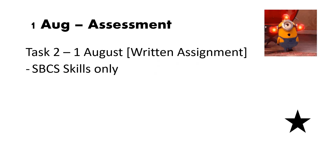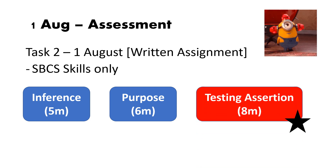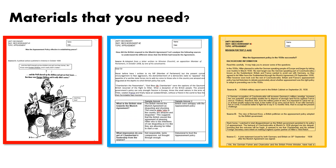Now for the 1st of August, it is a written assignment. It is only skills, and you can see these are the skills I'm testing you on. I will go through inference, purpose, and I will also review what testing assertion is. For the test, the materials you need are Appeasement Worksheet 1, Appeasement Worksheet 2 which is in your file, and Appeasement Worksheet 3 — the yellow-colour paper that I gave last lesson. Definitely to prepare yourself, you need all three worksheets.